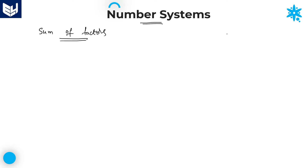Let me explain a small example. For the number 6, the factors are 1, 2, 3, and 6. Sum of factors means we need to add all these factors: 1 plus 2 is 3, 3 plus 3 is 6, 6 plus 6 is 12. So sum of factors is equal to 12.